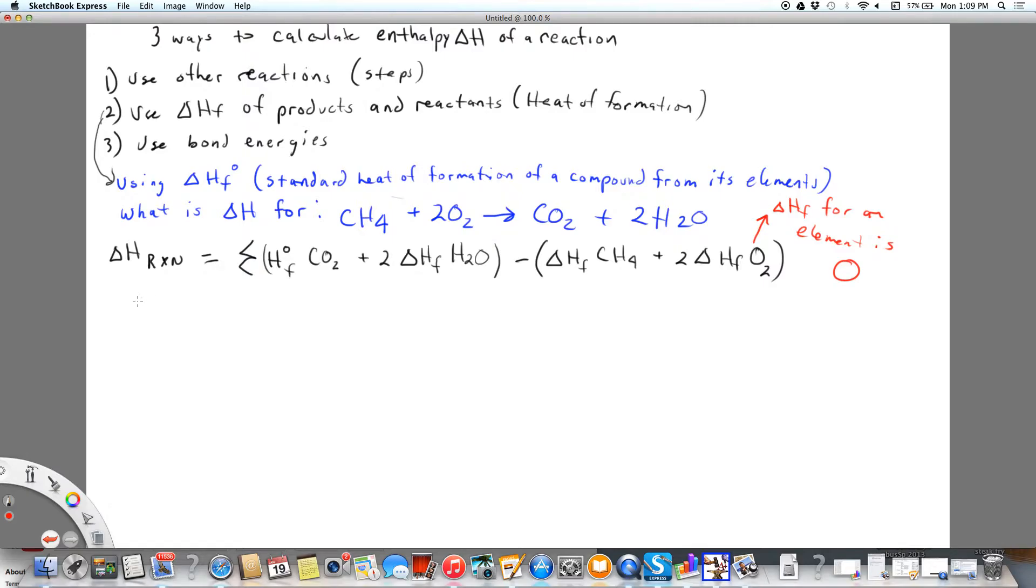If I say that the heat of formation of methane, that's one of our compounds here, equals negative 74.9, that is the energy of forming methane from the elements, carbon plus two hydrogen producing CH4. So that's where this delta HF comes from. It comes from the formation of the compound from its products.